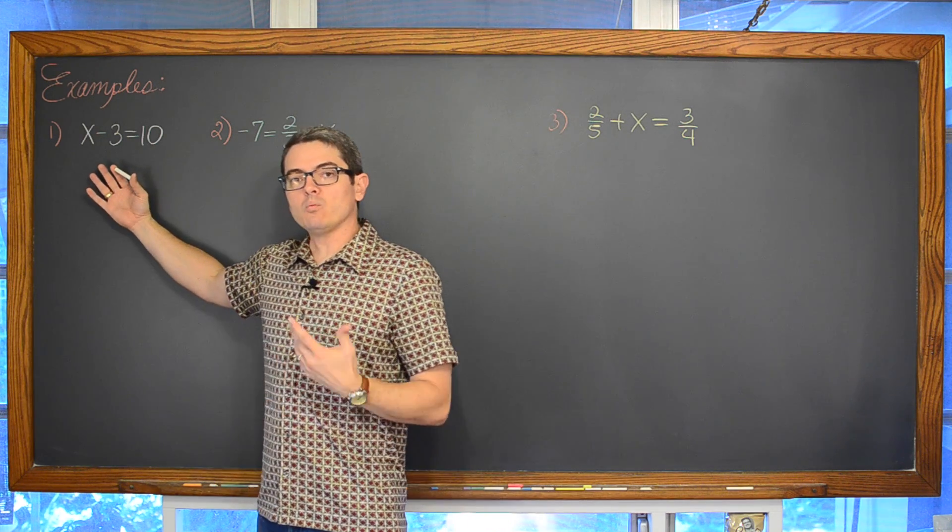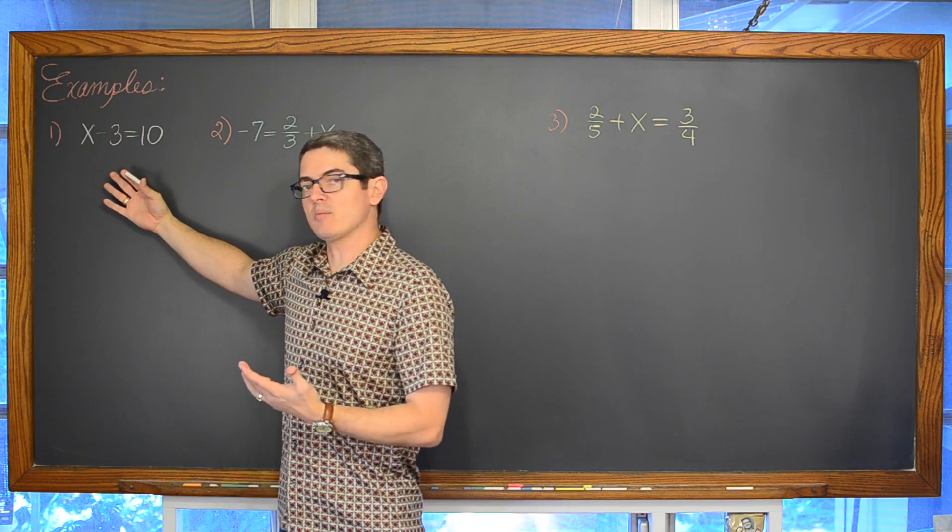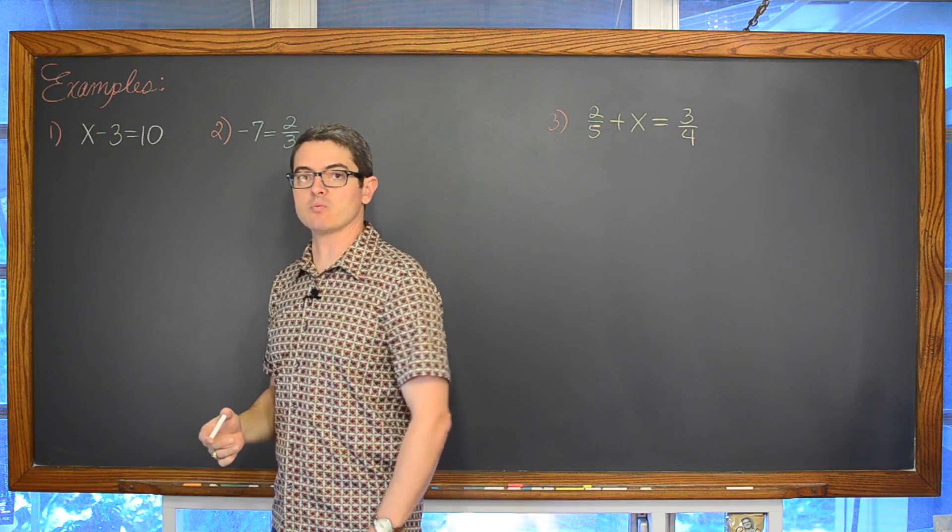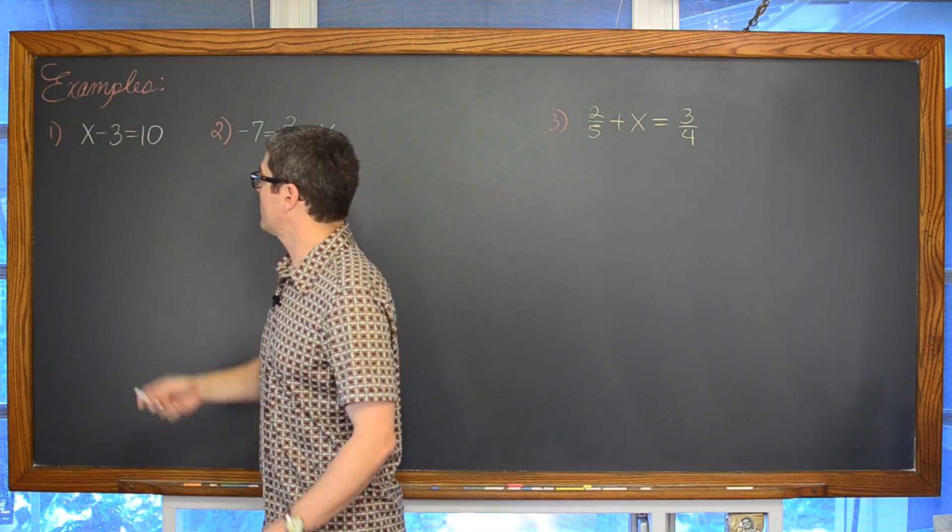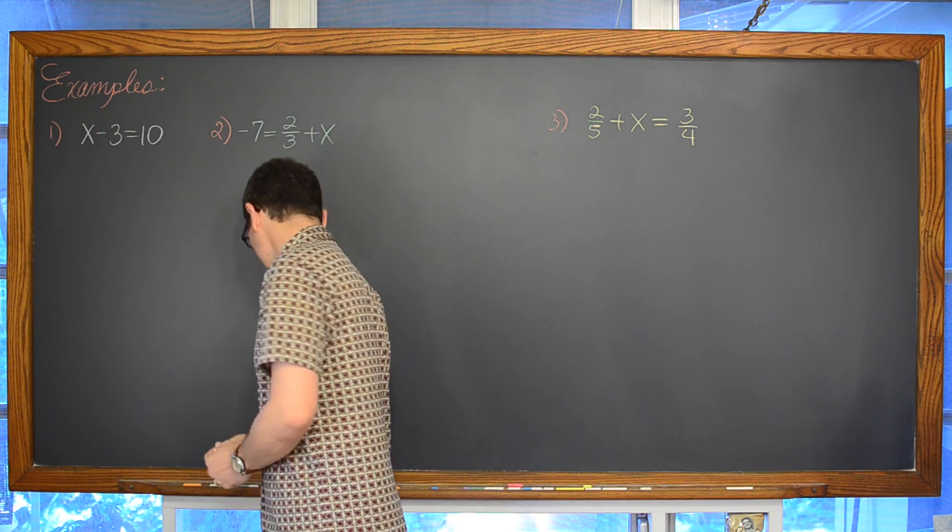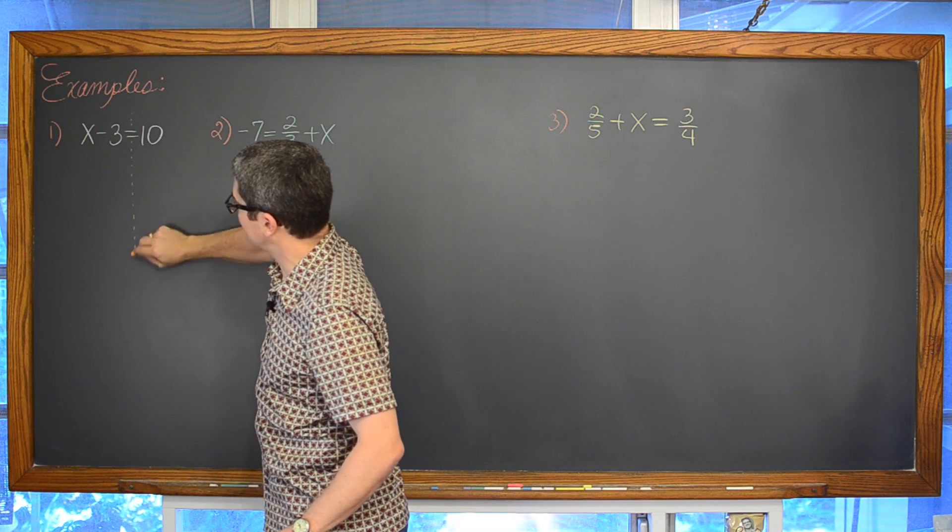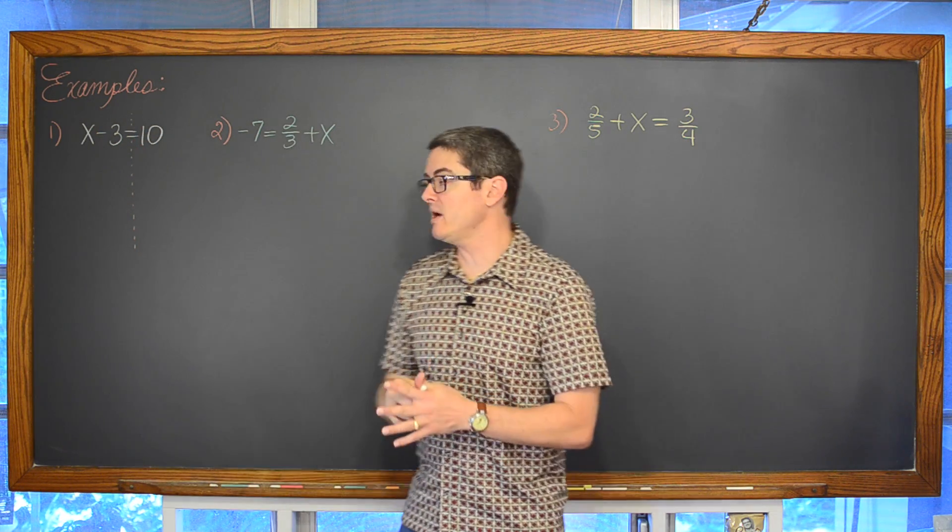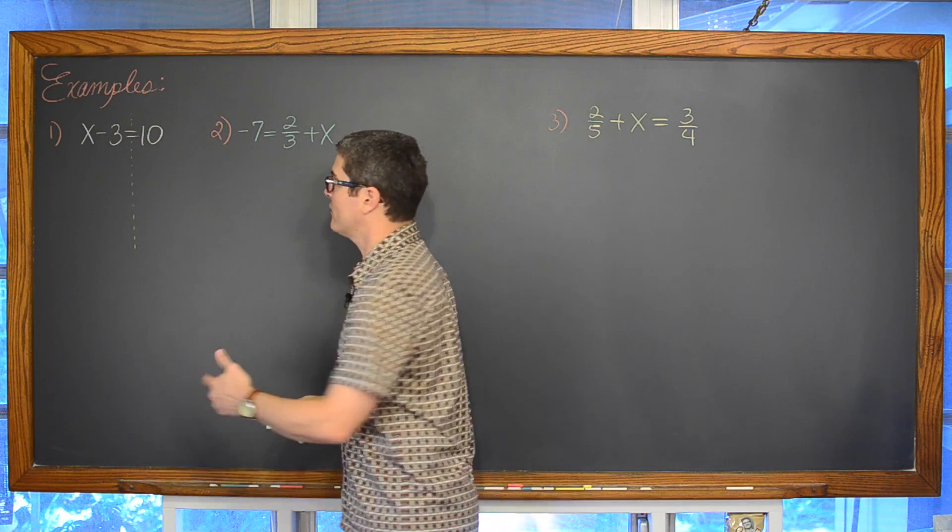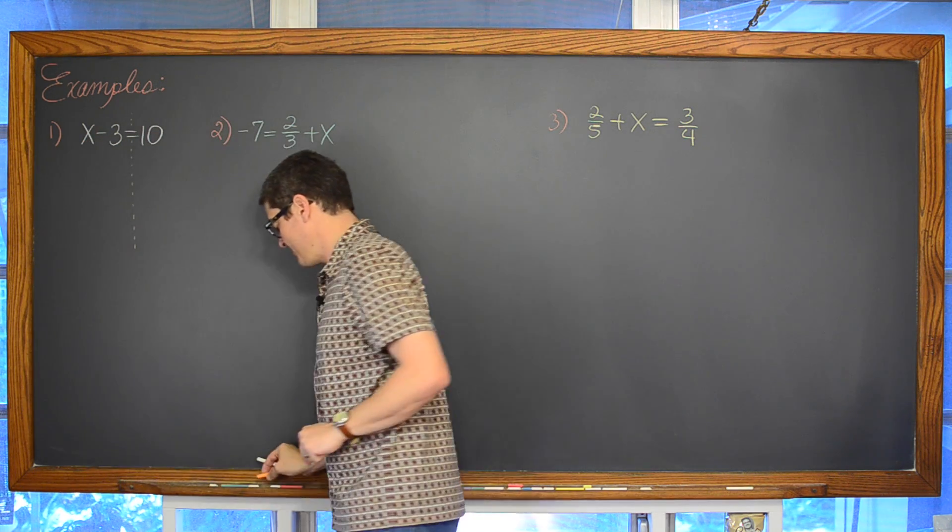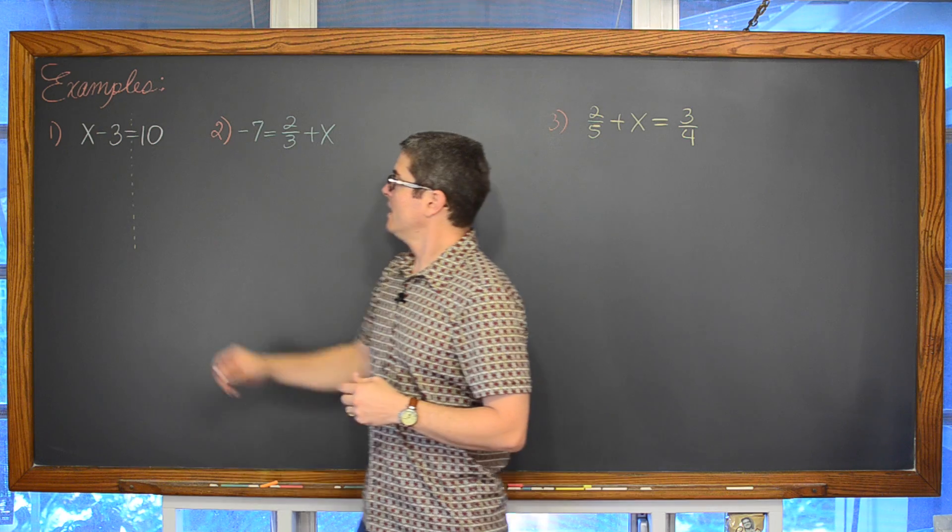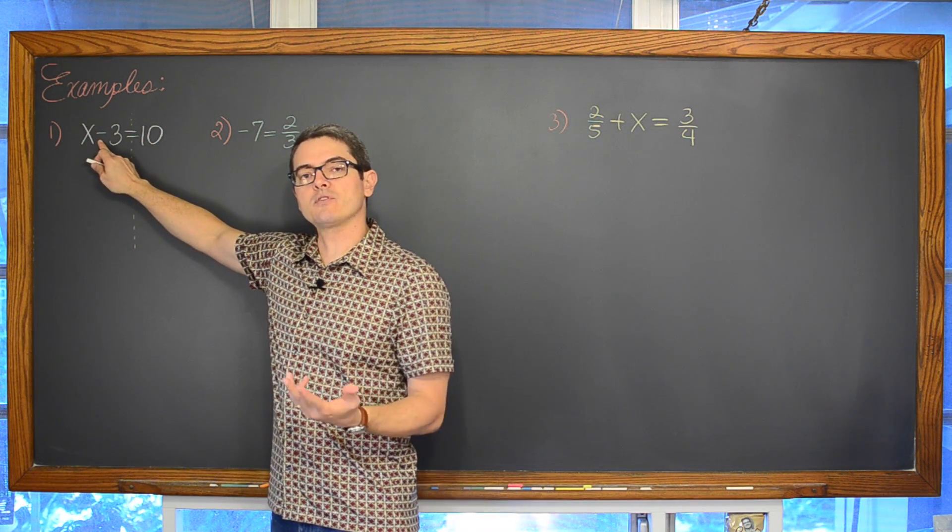But what do you really need to do? What algebraic process do you need to go through solving this? Well the addition property of equality. You want to undo, and by the way here is the equal sign coming down and dividing the left and right hand sides of this equation. I am identifying the variable as being on the left hand side and with that variable of x, the unknown, we have a subtraction of 3.